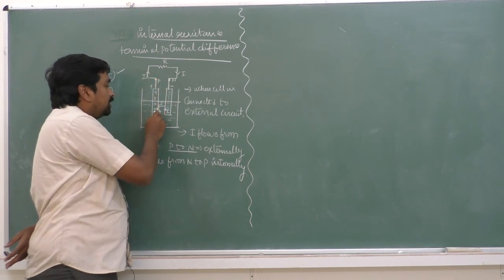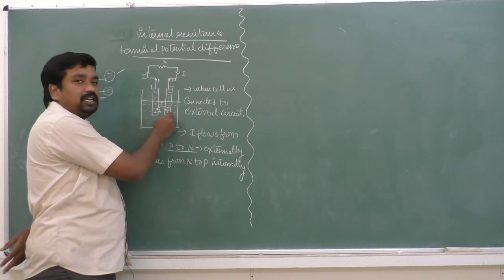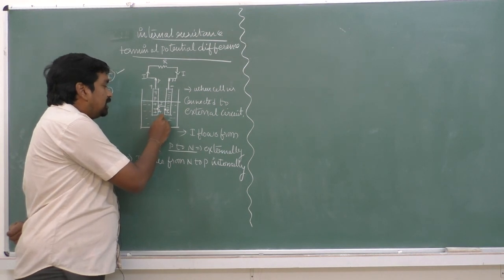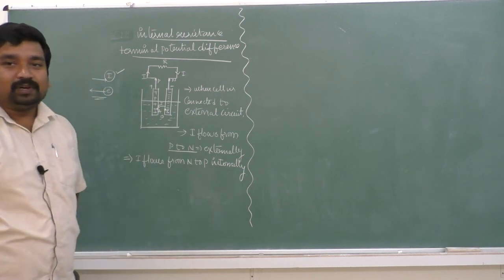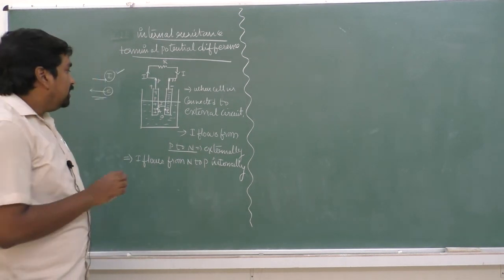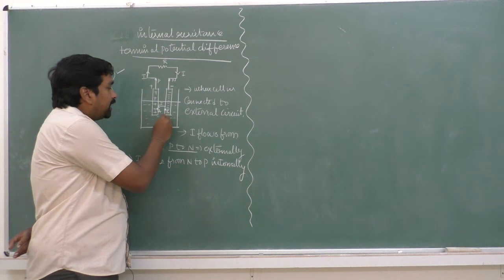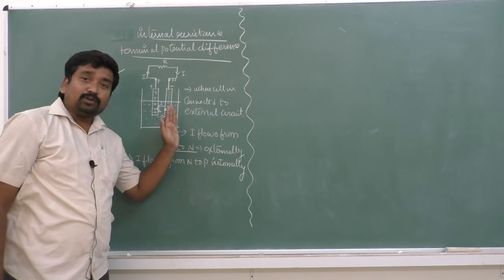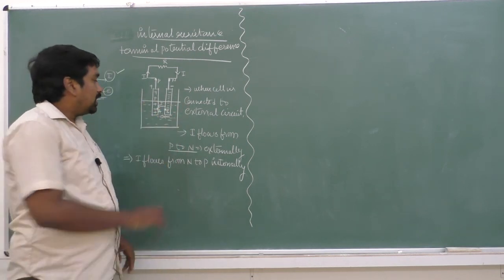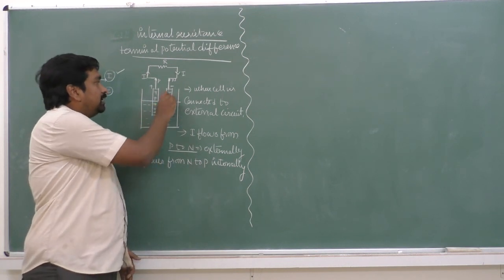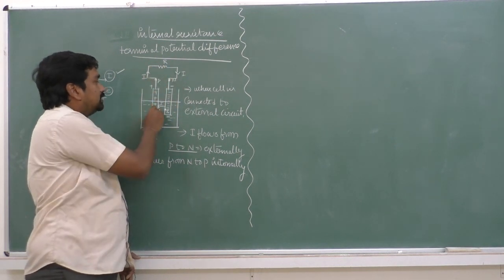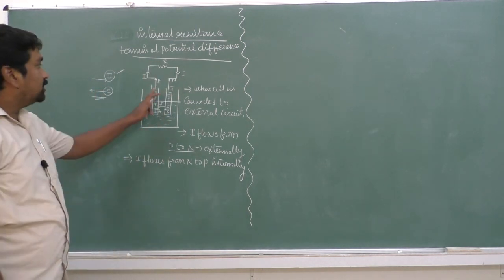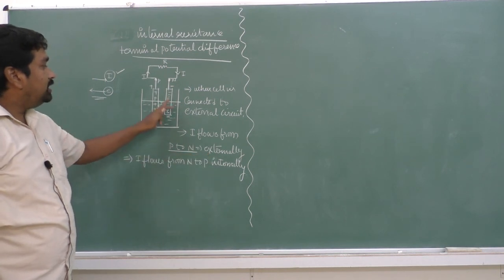The electrons start to flow from the negative terminal into the electrolytic solution and jump to the positive terminal. The force offered by the negative terminal to attract electrons from the electrolytic solution is more than the electrostatic force. This is how the current flows P to N externally in the circuit and N to P internally inside the cell.